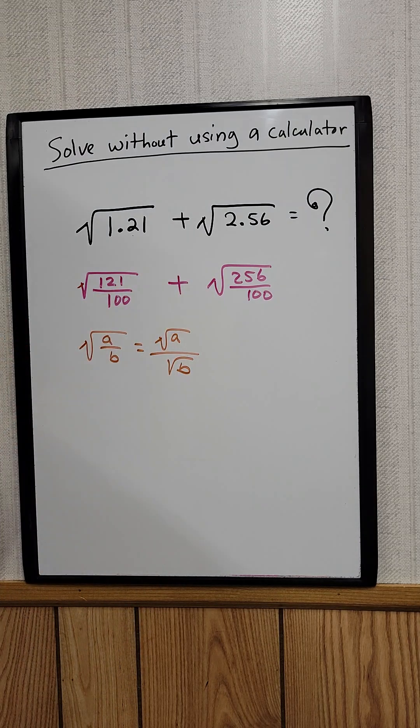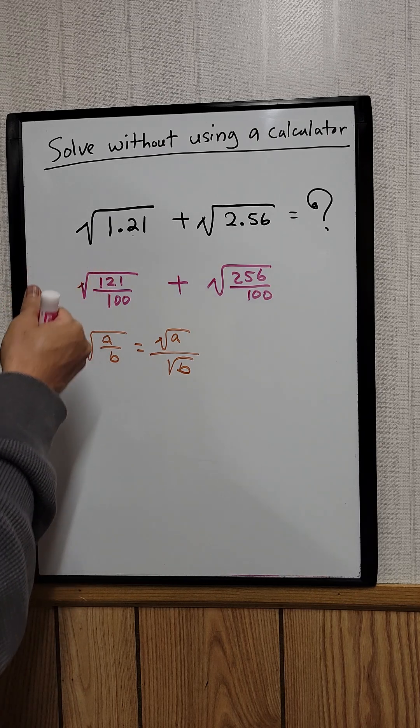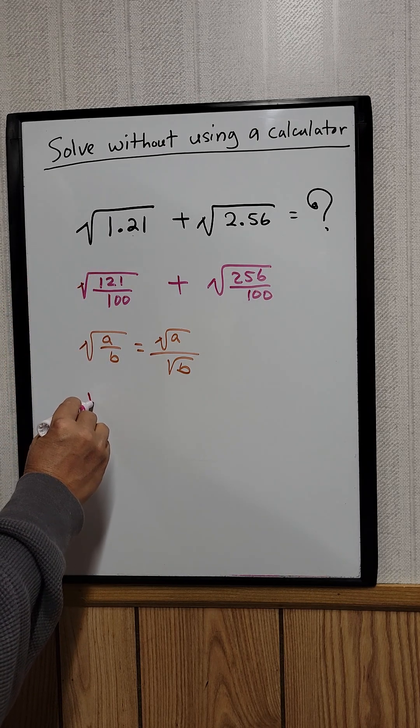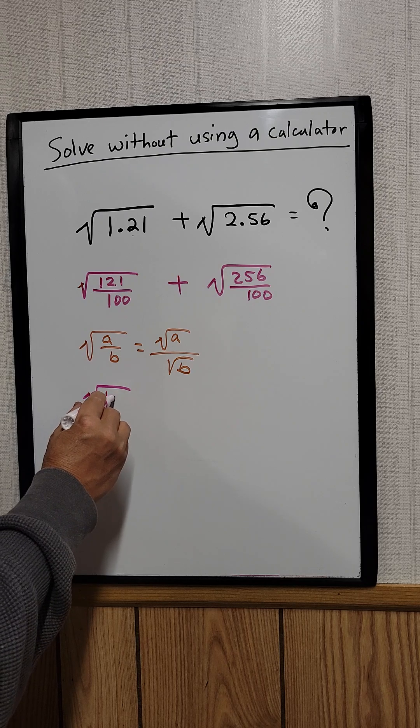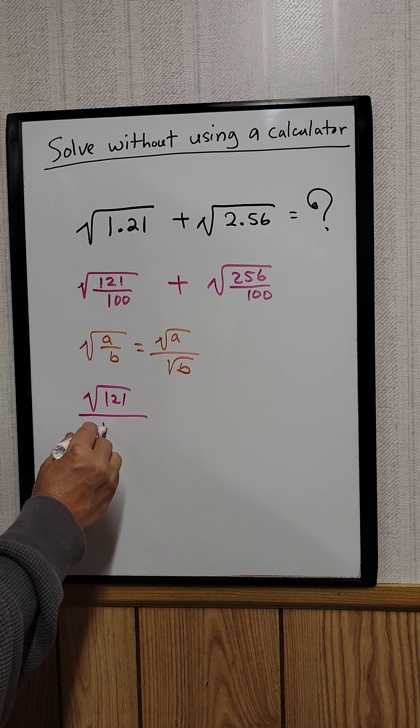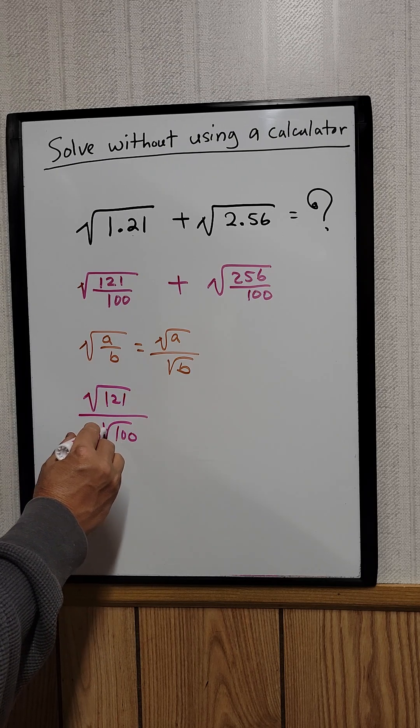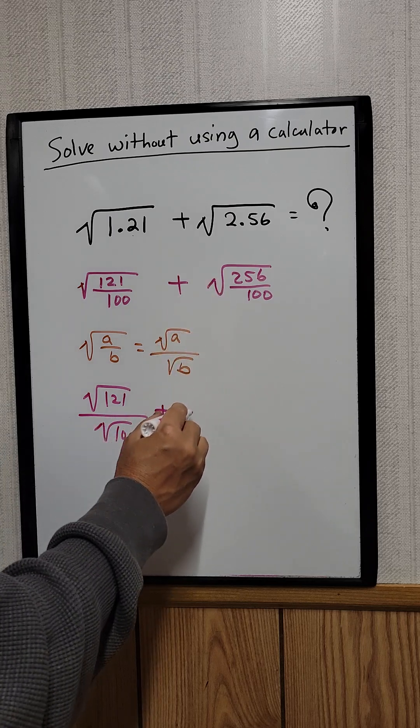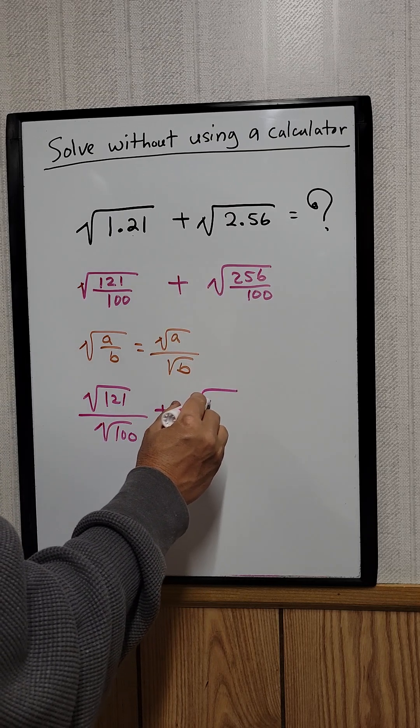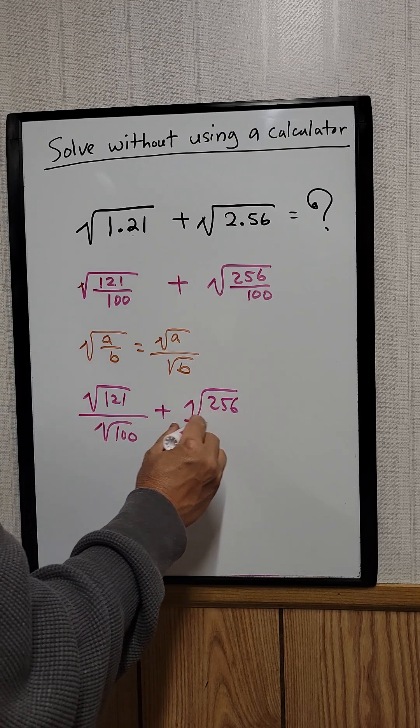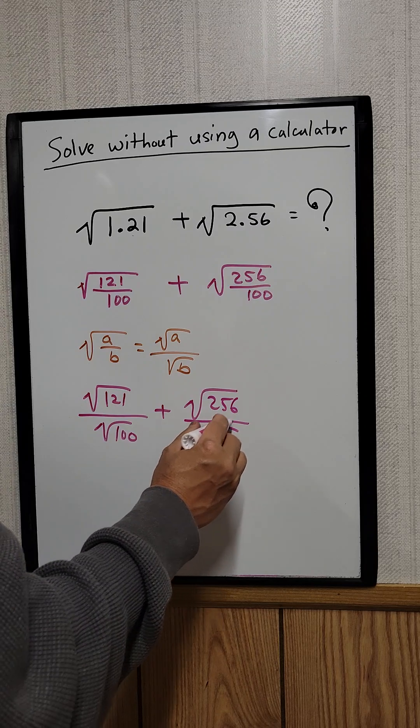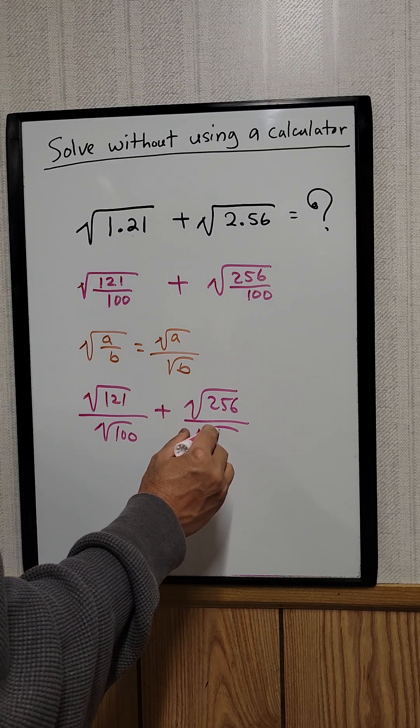We can use this. So now we can say that for this one, we can say that the square root of 121 divided by the square root of 100, plus the square root of 256 divided by the square root of 100.